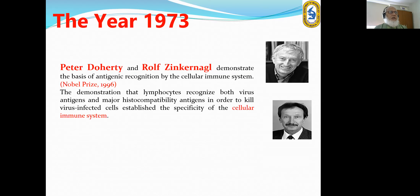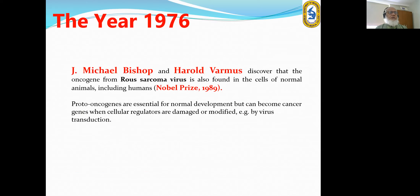In 1973, Peter Doherty and Rolf Zinkernagel demonstrated the basis of antigenic recognition by the cellular immune system, receiving the Nobel Prize in 1996. They established the predominant role of the cellular immune system in coping with viral infection. In 1976, Michael Bishop and Harold Varmus discovered that the Rous sarcoma virus oncogene is also found in cells of normal animals, including humans — they received the Nobel Prize in 1989.